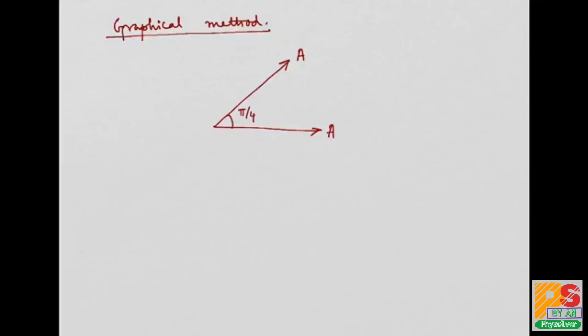For the second wave whose phase is +π/4, that means the amplitude is leading by π/4 angle. And for the third wave, the phase angle is -π/4, so I can draw the third wave like this, which is lagging behind this wave by π/4.